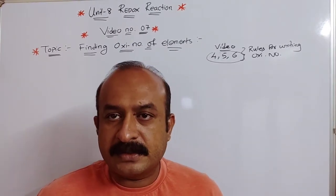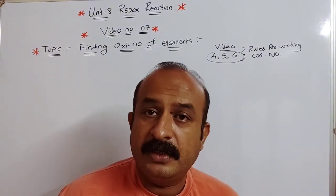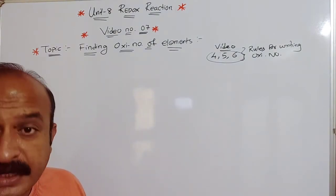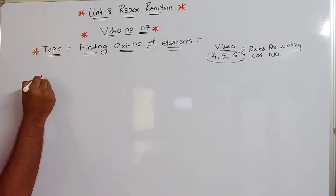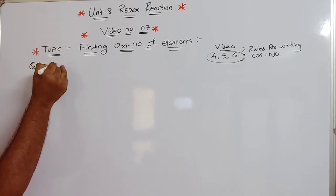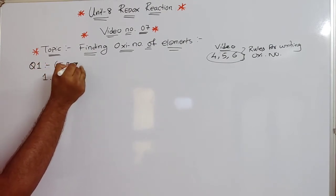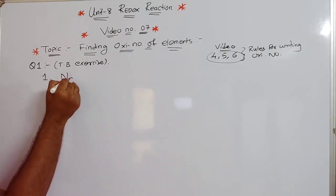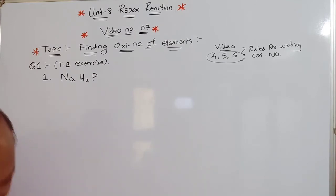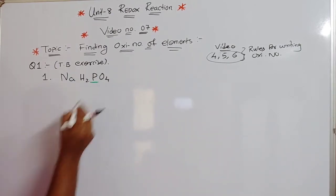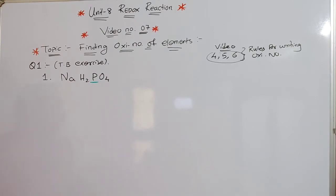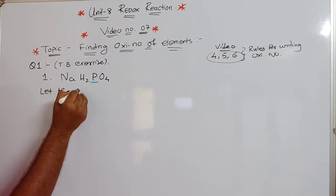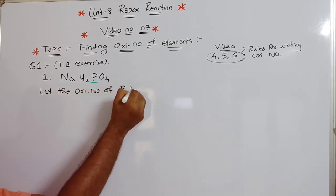In your textbook exercise on redox reactions, question number one asks you to assign oxidation numbers to the underlined element in each compound. The first example is NaH₂PO₄, where phosphorus is underlined. We need to find the oxidation number of phosphorus, so we let the oxidation number of phosphorus be x.